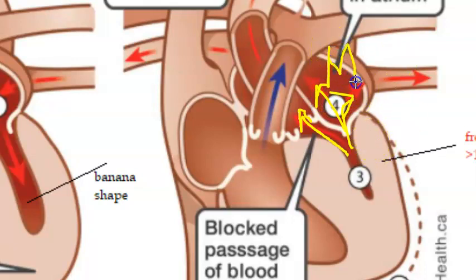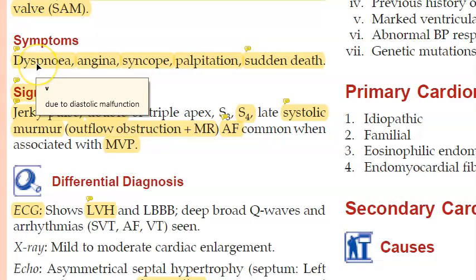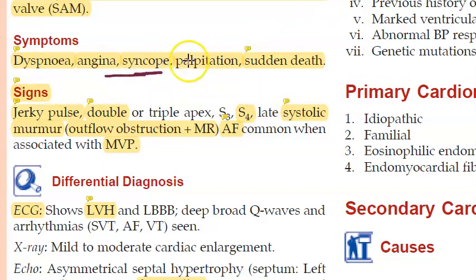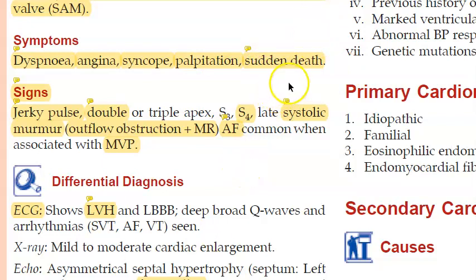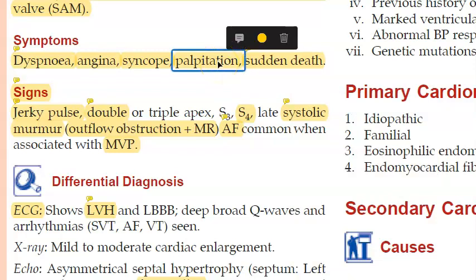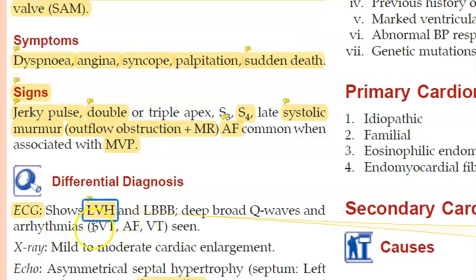Symptoms include dyspnea because the atria and lungs are affected, angina or chest pain, and syncope due to reduced cerebral flow. Palpitations and sudden death are also possible. If the free wall thickness is greater than 13 millimeters, there is a significant risk of sudden death.